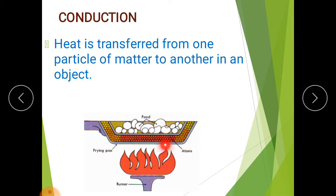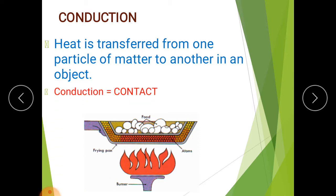The movement of heat through a solid such as metal is called conduction. This solid metal pan transfers heat to the food — that is conduction. Conduction means contact, so there is contact between both of them: the frying pan and the eggs.